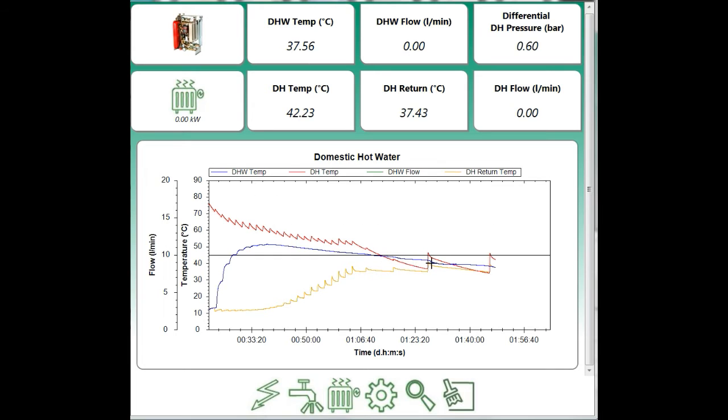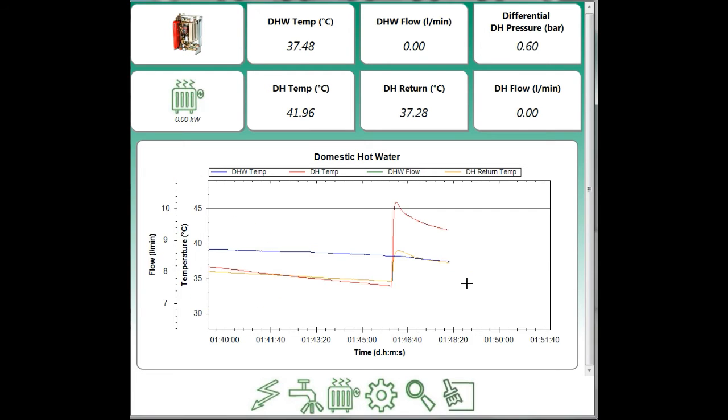Now, if we skip to 15 minutes later, you can see how this has happened. The return temperature, once it's achieved 35 degrees C, the unit stops letting in really any more heat at all. Until the domestic hot water temperature dropped down to the region of 35. At which point the unit starts letting in a small amount again.